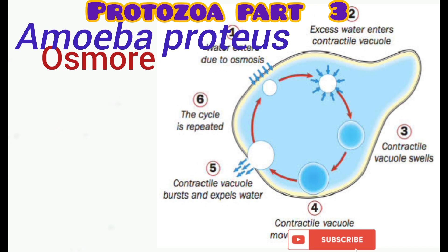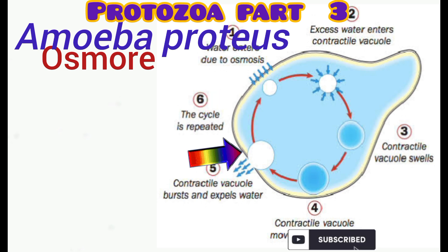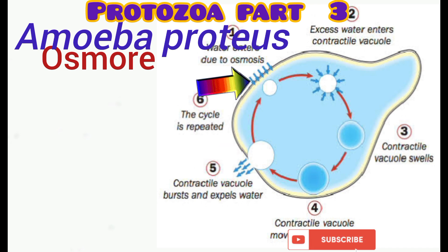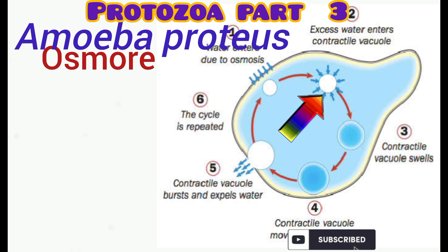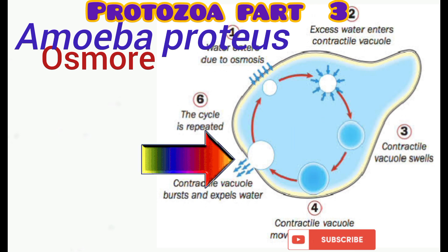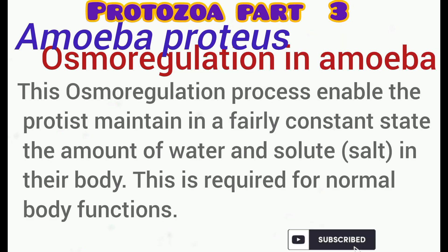This excess water moving in is expelled using the contractile vacuole, which collects the excess water and periodically expels it out. As seen in the diagram, excess water enters through osmosis, is collected by the contractile vacuole, which eventually swells and moves toward the edge of the cytoplasm and expels it out. This process occurs periodically.